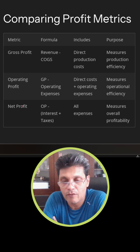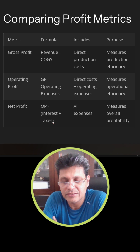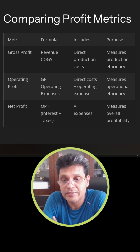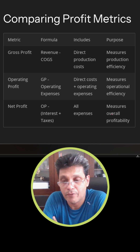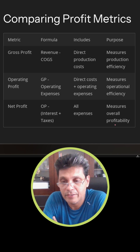Net profit is calculated by taking into account operating profit minus interest and taxes. So in this case, we take all the expenses to calculate net profit. This measures the overall profitability of the company.